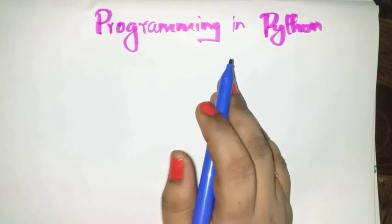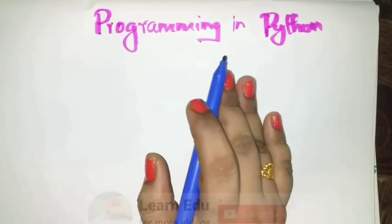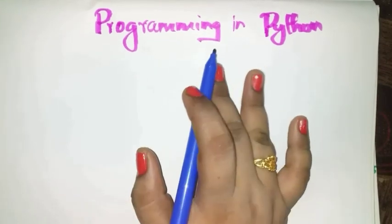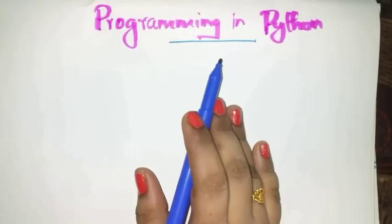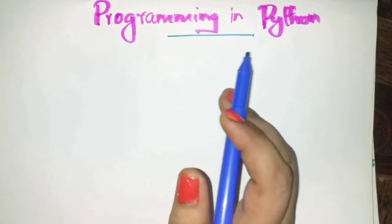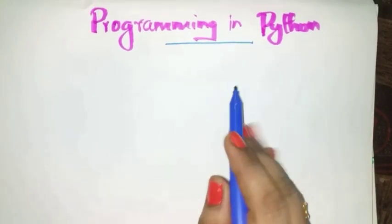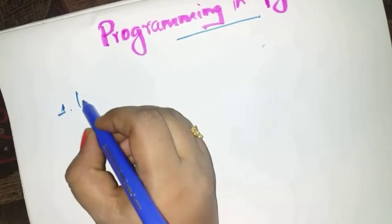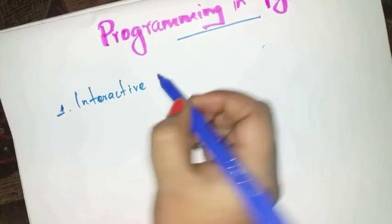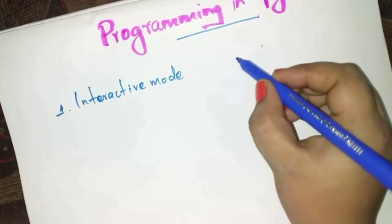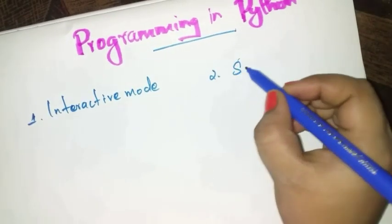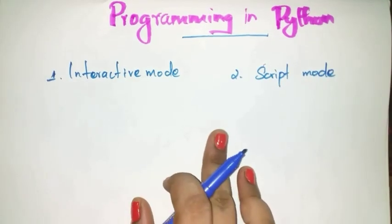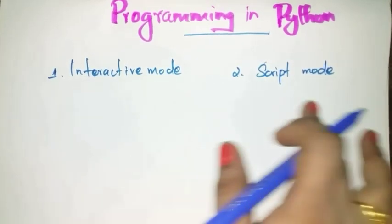Hi students, now coming to the next important topic in the chapter: Python operators and variables, that is programming in Python. In Python, programs can be written using two modes: the first one is interactive mode, and the second one is script mode. If you need to write Python codes, you can choose any one of these modes.